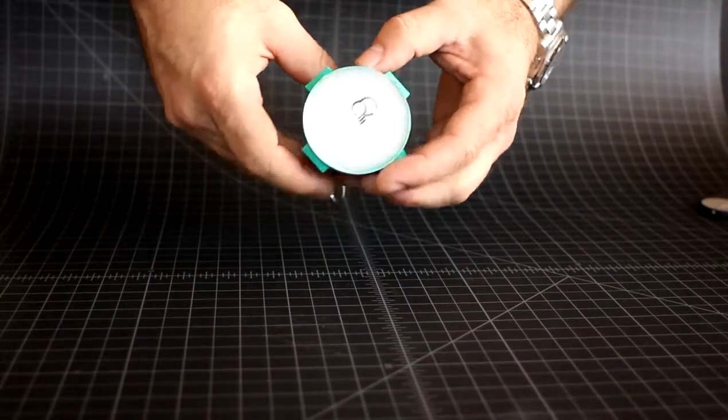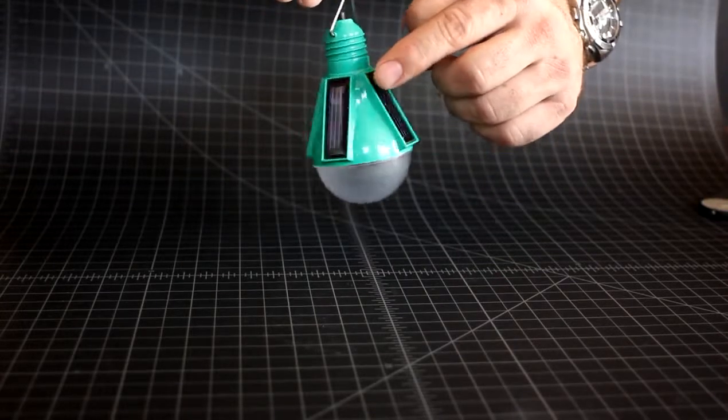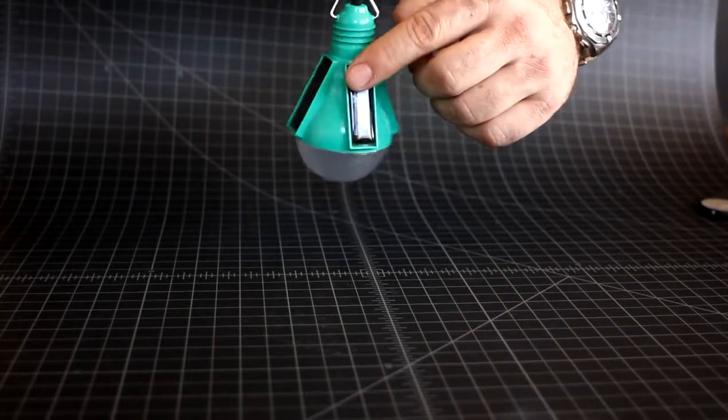This is the Nocaro N100 solar powered light bulb. It's powered by these four solar panels located on the outside of the bulb.